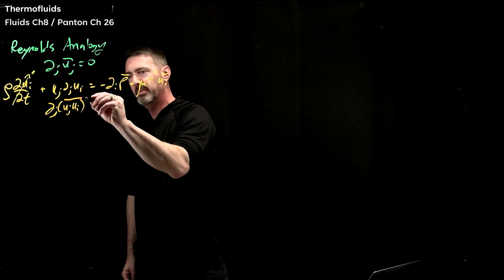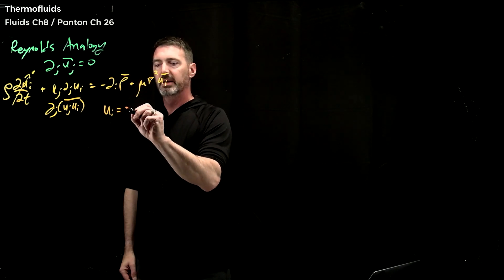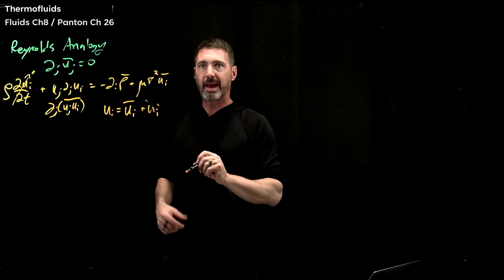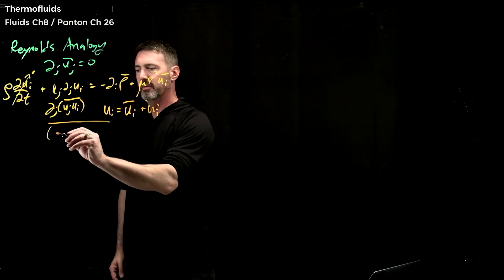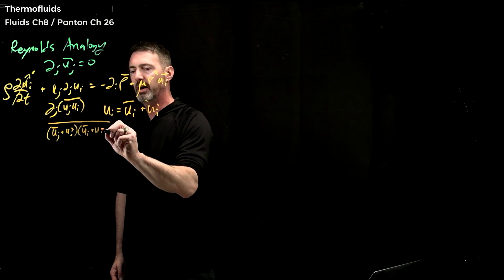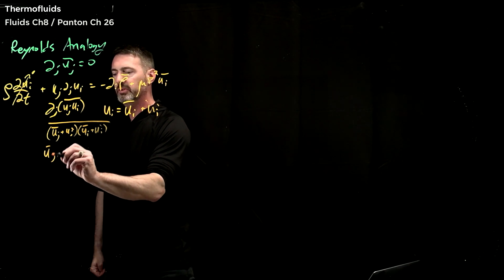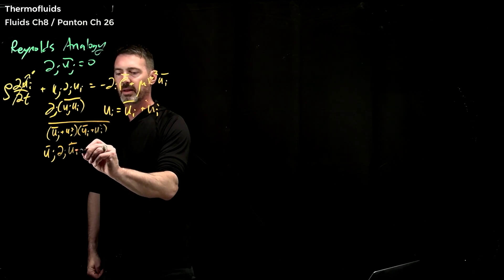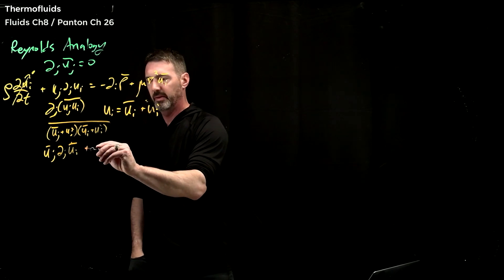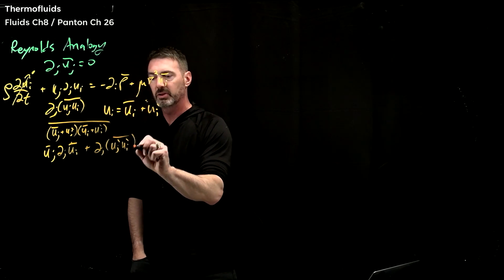After time averaging, each one of these terms — generically, you can say that the velocity field is made up of an average plus a fluctuating quantity. So when we look at the average of uj del_j ui, we break it up: it's the average of (uj-bar + uj-prime) multiplied by (ui-bar + ui-prime), that whole thing averaged. This term ultimately comes out as uj del_j ui-bar, and then what goes on the other side of the equation is the Reynolds stress — del_j of uj-prime ui-prime averaged.